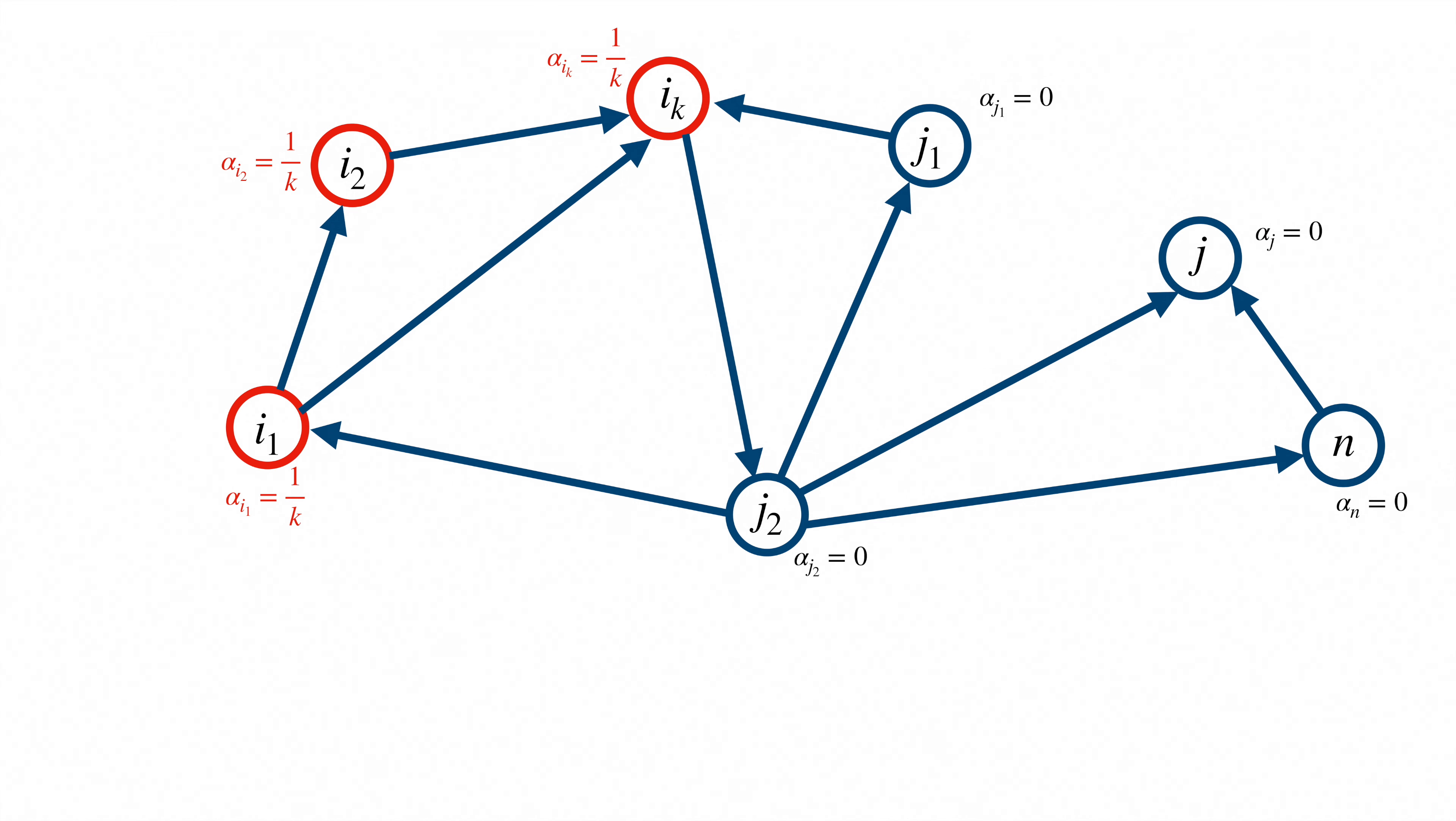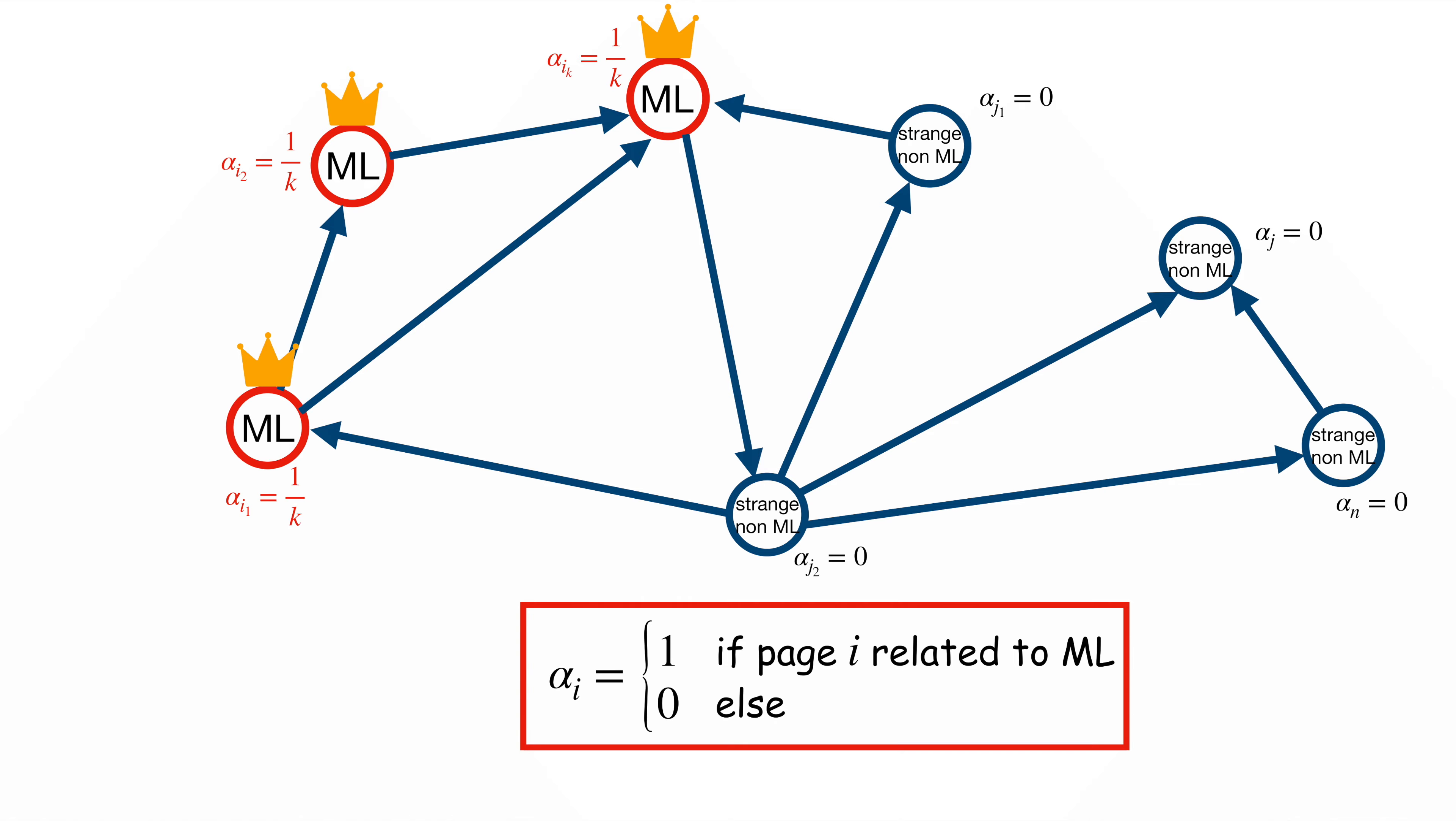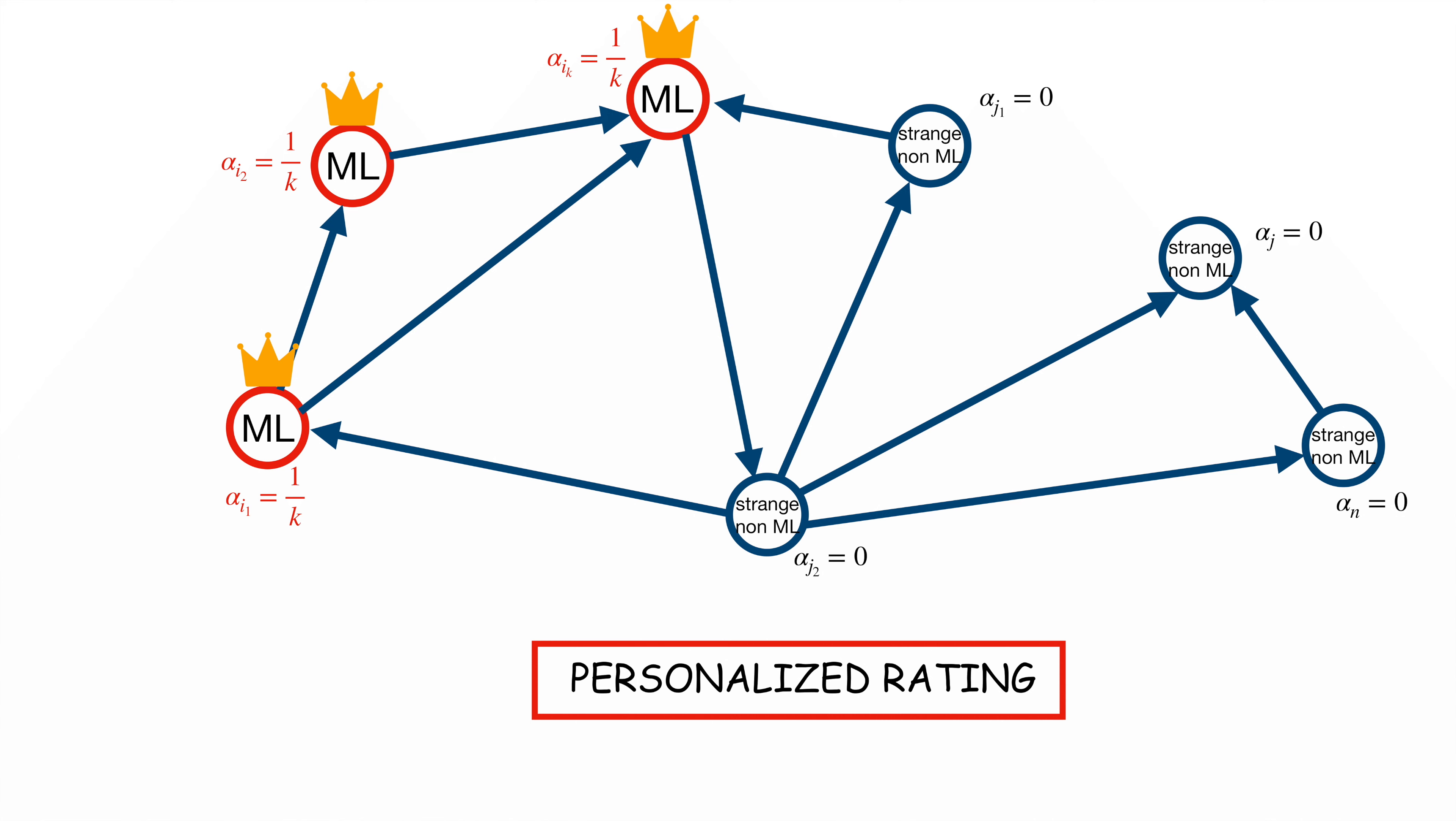You could also choose k pages i1, i2, iK and set alpha i1, alpha i2 and so on until alpha iK all equal to 1 out of k and alpha i is equal to 0 for all the other values of i. For example, you can choose for i1, i2, iK all the webpages related to machine learning. So that includes this channel's blog, mlnewpapers.com. But more importantly, if you do this, you will increase the rating of the webpages related to machine learning. And this is how you can provide personalized rating.